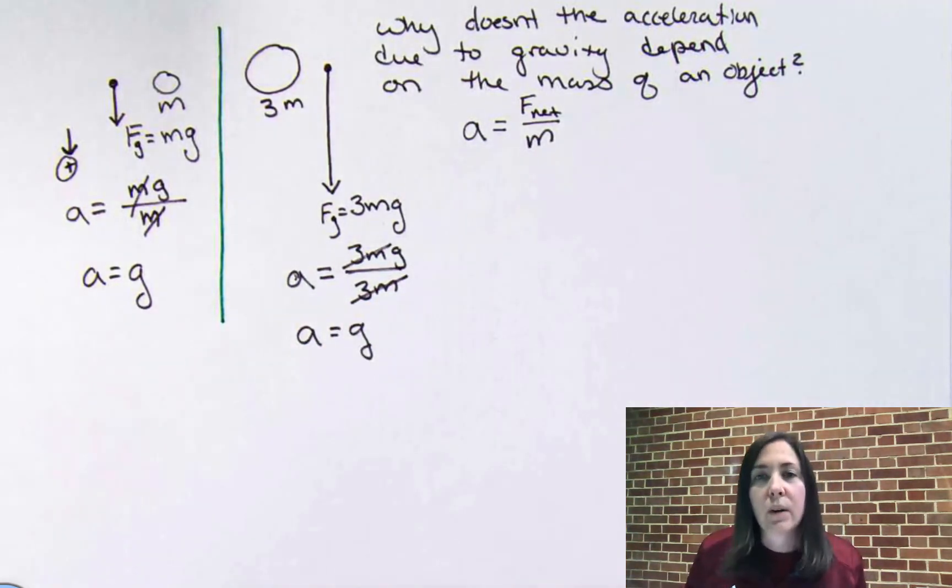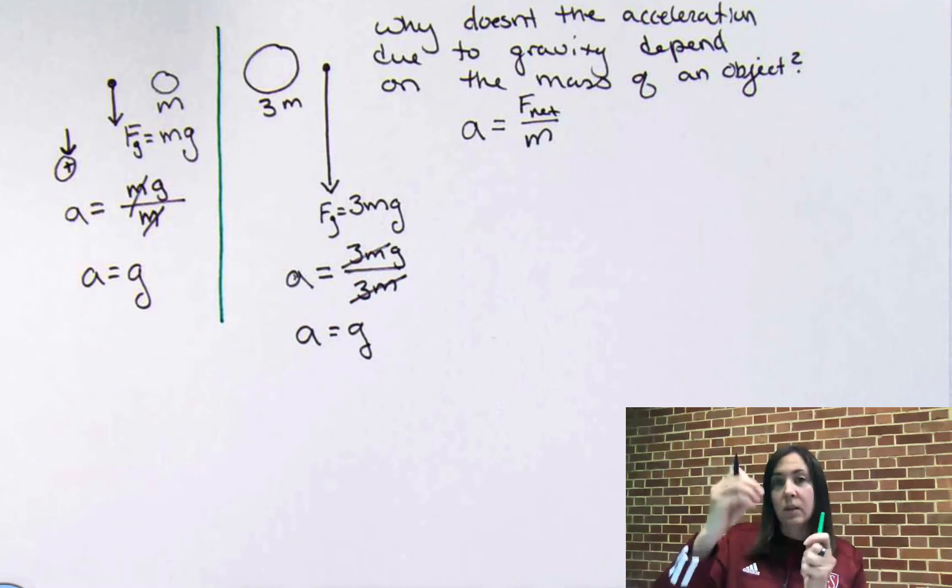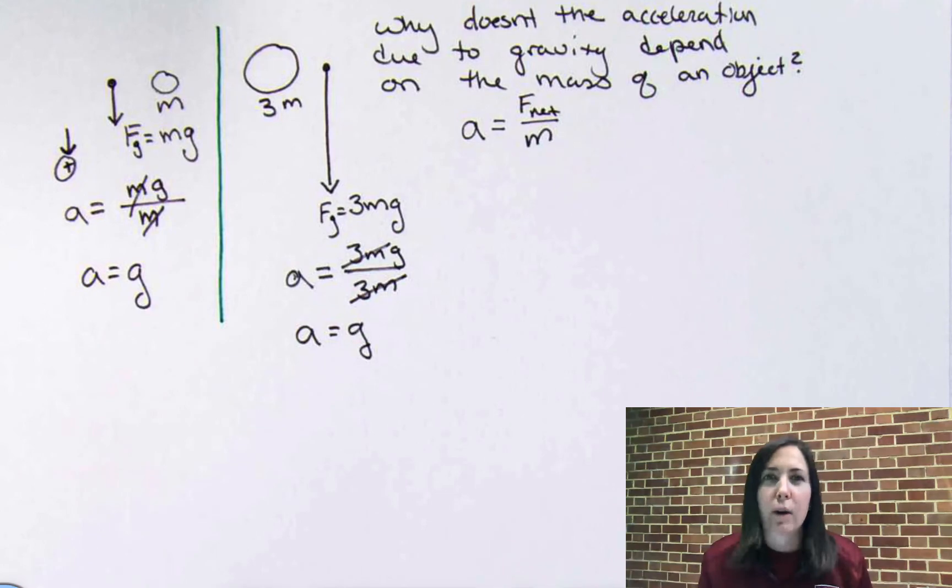So, this is a very quick, brief explanation why the acceleration due to gravity does not depend on the mass of the object. It's because the net force increases, but the mass also increases, and they cancel each other out.